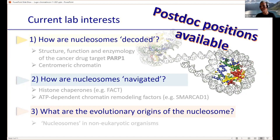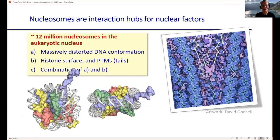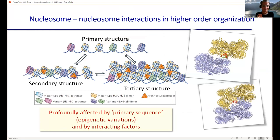I want to give a brief vignette on some unpublished data about centromeric chromatin. Nucleosomes are the interaction hubs for numerous nuclear factors. There are millions of nucleosomes in the cell, and a factor can recognize the distorted DNA, the histone surface or tails — our beloved readers and writers of post-translational modifications — or any combination of the two. By far the most important interaction partner would be a nucleosome itself.